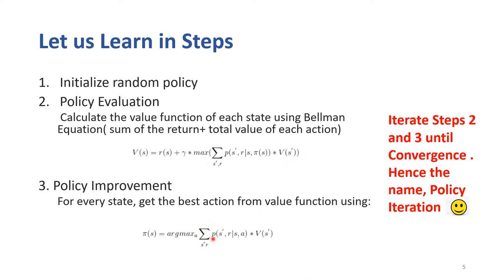For policy improvement, the argmax comes into the picture. We calculate the state values for both north and south actions — whichever gives the maximum value, we take that direction at each step. We iterate the policy evaluation and policy improvement steps again and again, re-evaluating the values of all states and improving the policy at each state. When the policy converges — meaning no further changes occur — we stop. Hence the name policy iteration.